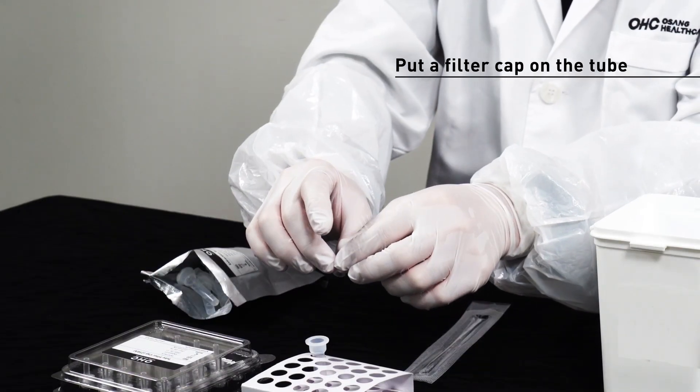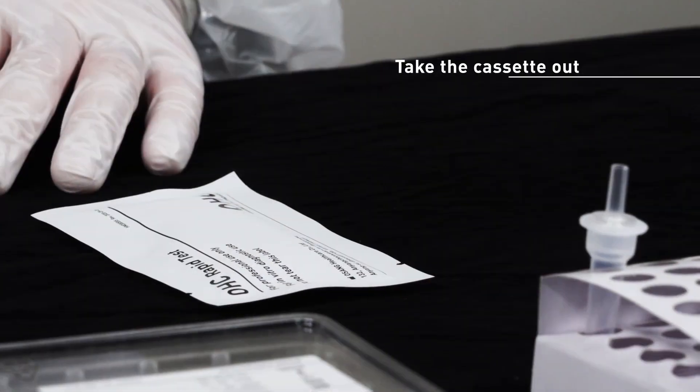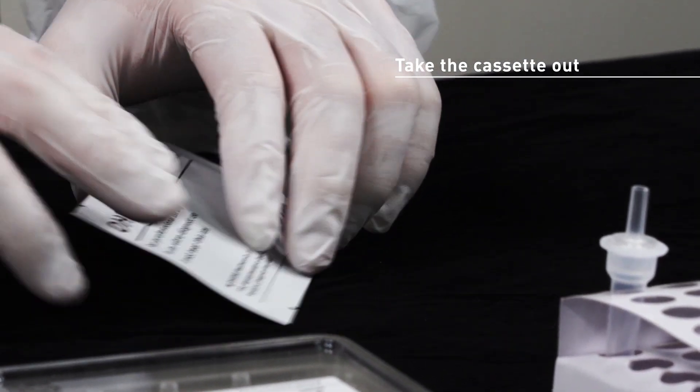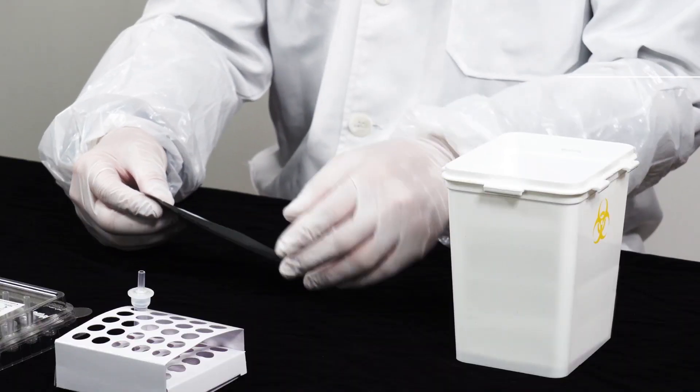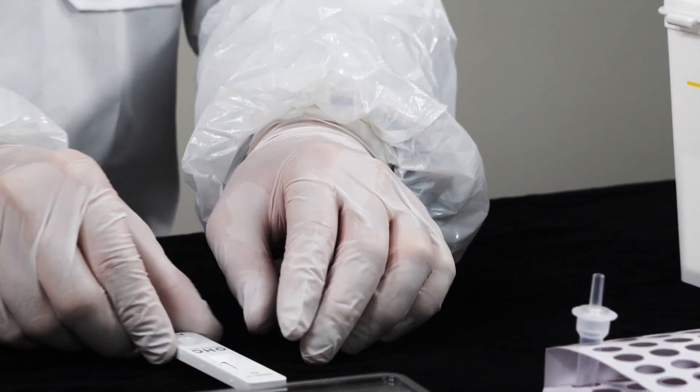Put a filter cap on the extraction buffer tube containing the sample extract and close it. Open the pouch at the notch and take the cassette out of the pouch, then place the cassette on a clean and flat surface.